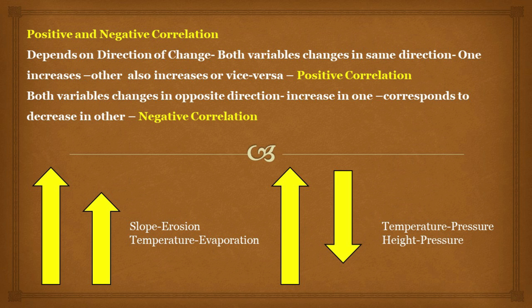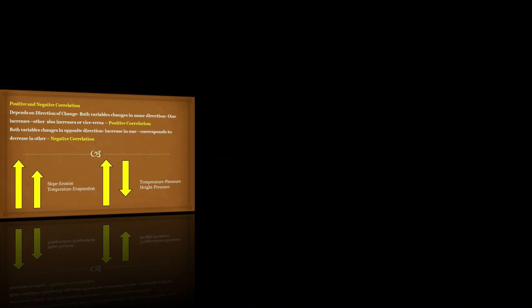We have examples of positive and negative correlation. Slope and erosion: the steeper the slope, the greater the erosion — this represents positive correlation. Similarly, increase in fertilizers leads to increase in production, and rate of temperature increase leads to rate of evaporation increase. On the contrary, increase in height from mean sea level leads to decrease in temperature. Other examples of negative correlation include height and pressure, and temperature and pressure.